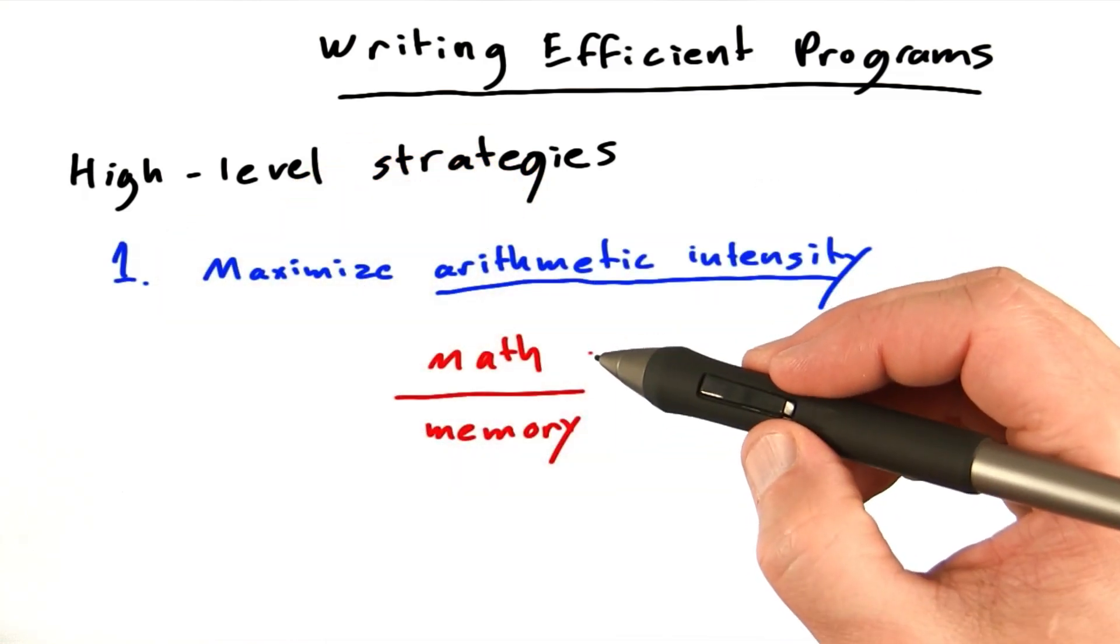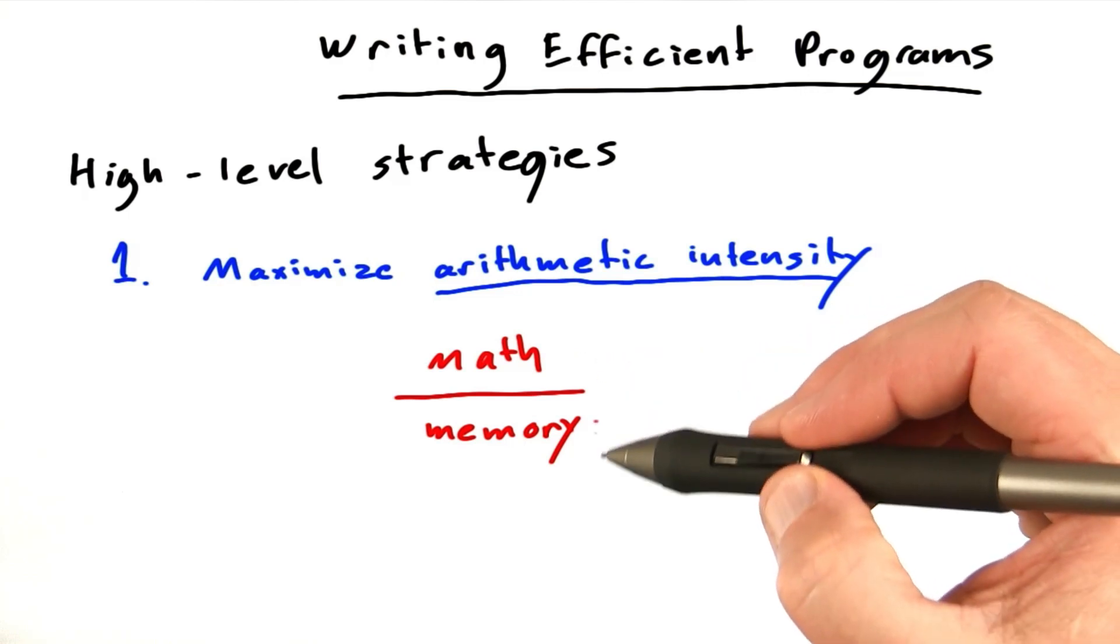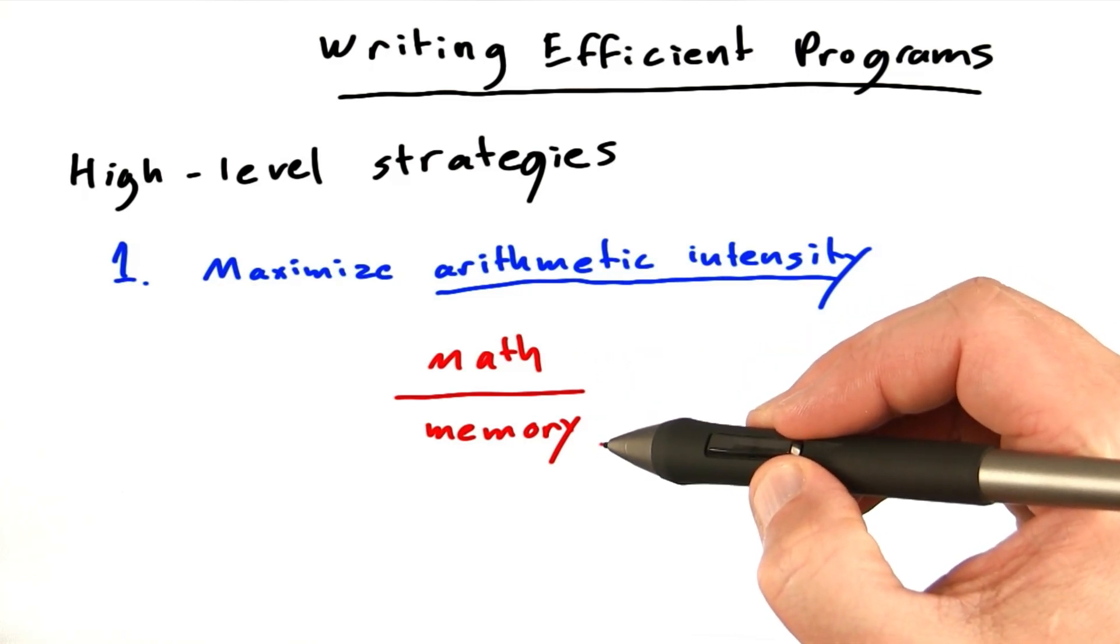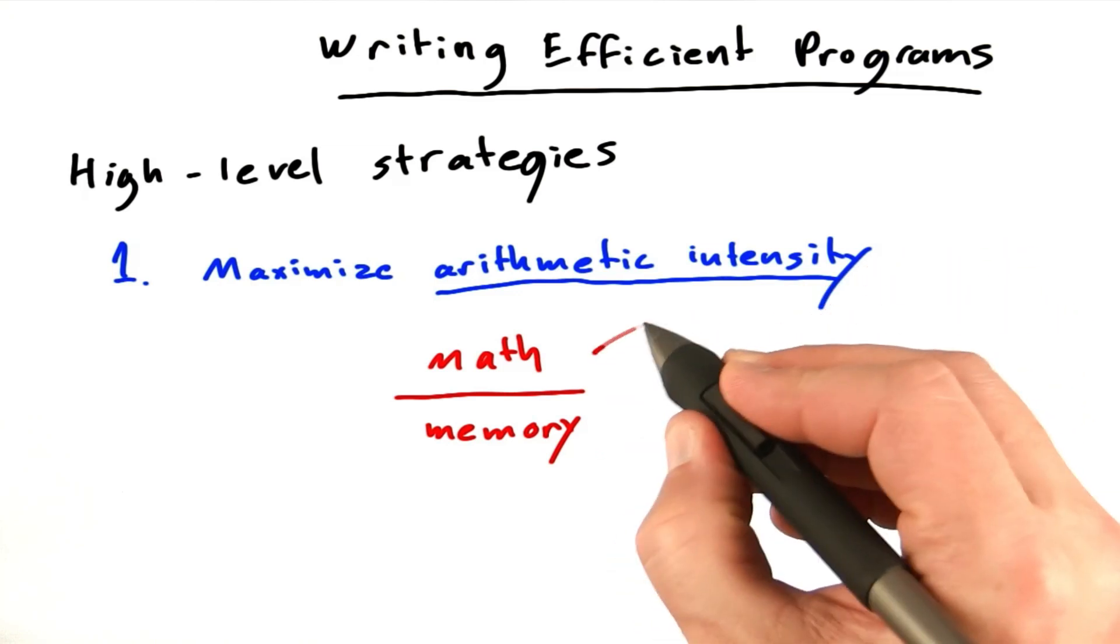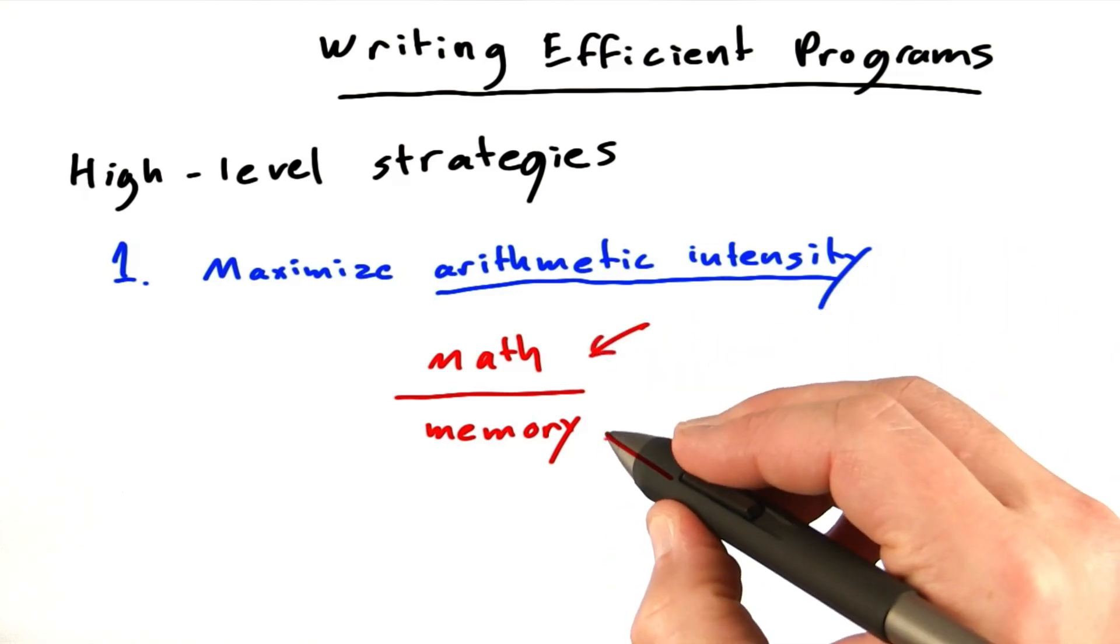Arithmetic intensity is basically the amount of math we do per amount of memory that we access. So we can increase arithmetic intensity by making the numerator bigger or by making the denominator smaller.